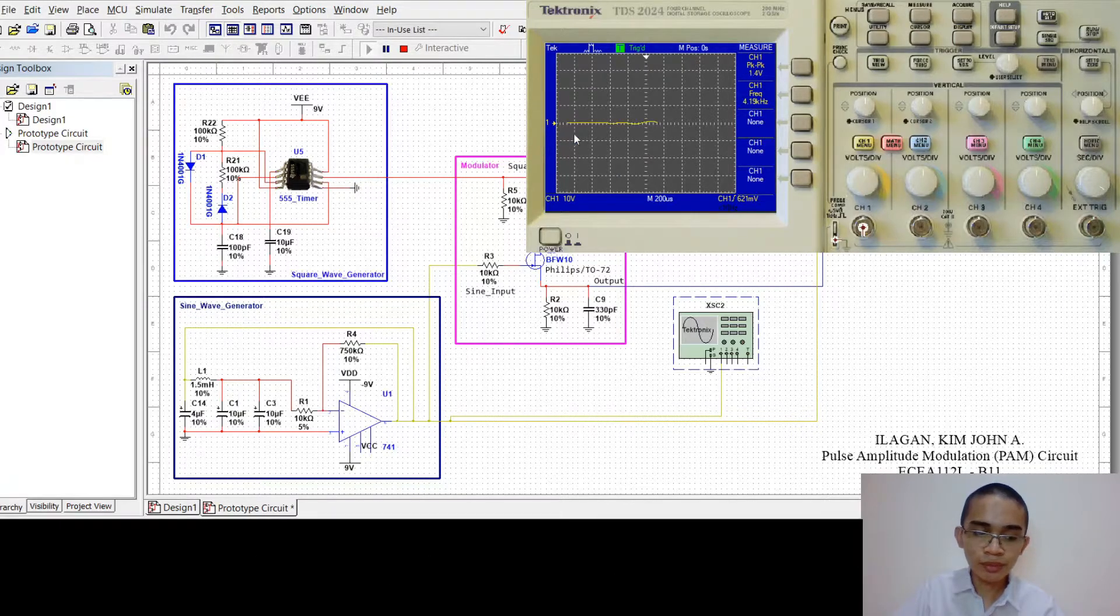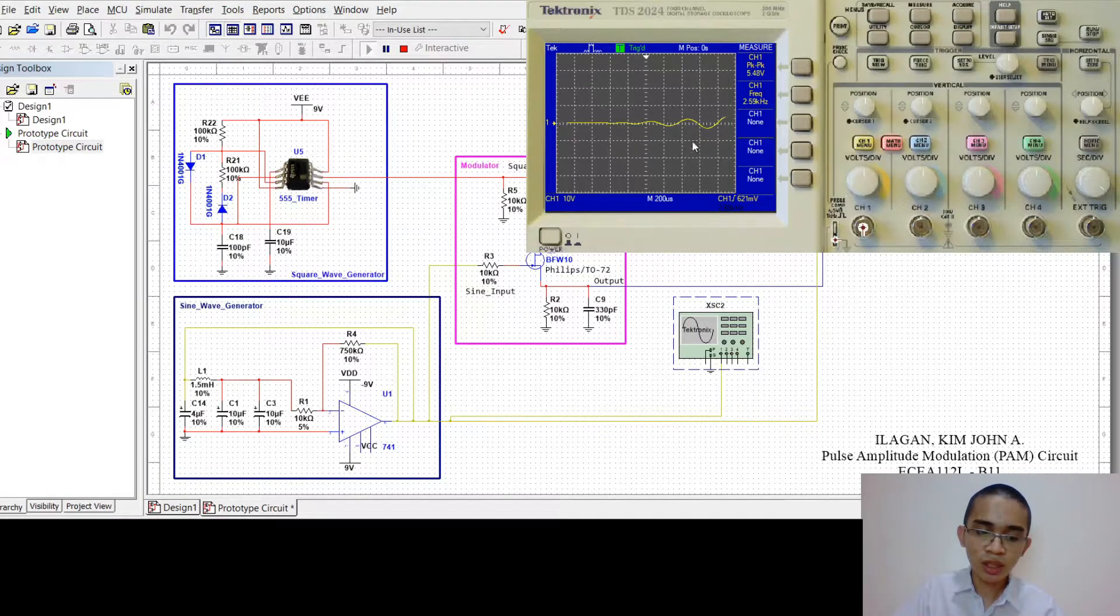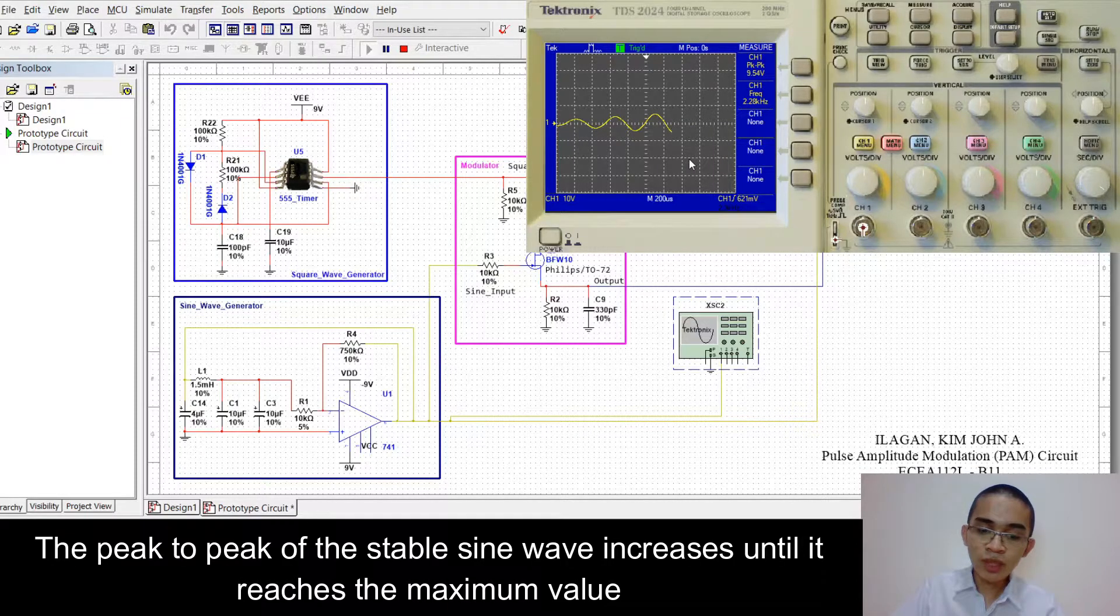Observing the sine wave, as you can see, the oscillator output starts very small curves to big ones. The peak-to-peak of the stable sine wave increases until it reaches the maximum value.